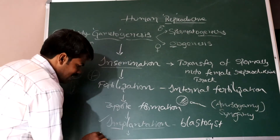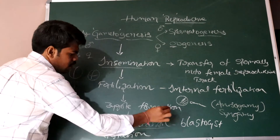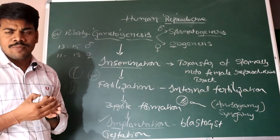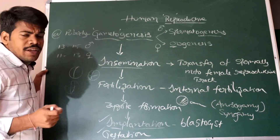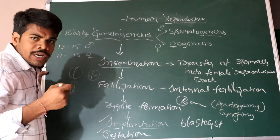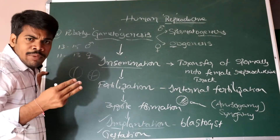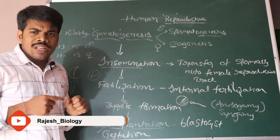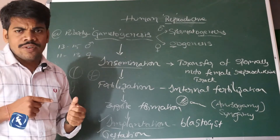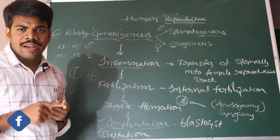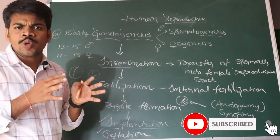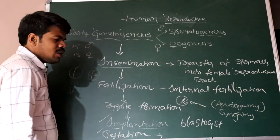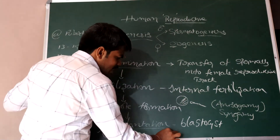After implantation, the embryo grows in the uterus for nine months. That nine-month period is called gestation. During gestation, the blastocyst develops into a bilaminar embryonic disc, then a trilaminar embryonic disc, forming three primary germ layers. Each germ layer gives rise to different tissues — epithelial, muscular, connective, and nervous tissue — leading to organ development. After nine months of gestation, delivery of the fetus occurs, which is called parturition.